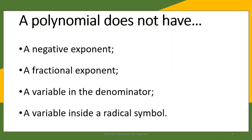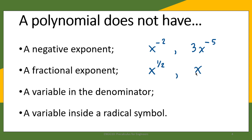How do you know if a given expression is a polynomial or not? A polynomial does not have a negative exponent. An example of an expression with a negative exponent is x raised to negative 2 — this is not a polynomial. Another example is 3x raised to negative 5 — also not a polynomial. Another expression that is not a polynomial is one with a fractional exponent. For example, x raised to one half or x raised to two-thirds are not polynomials.